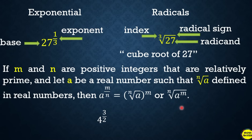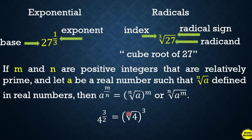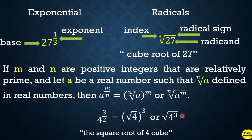For example, 4 raised to 3 over 2 written in radical form becomes the square root of 4 cubed. The index 2 is not written because when no index is shown, it is understood to be 2, meaning square root. So you can write it as the square root of 4 cubed — either with the exponent inside or outside the radical sign, both are correct. This is read as the square root of 4 cubed.